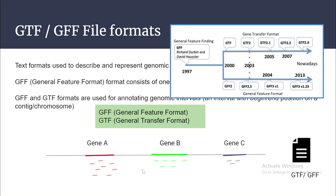The first annotation file format was GFF, which was developed by Richard Durbin and David in 1997. After that, in 2000 we have GTF and GFF2, and over the years different versions appeared such as GTF2, GTF2.1, GTF2.2, and the same for GFF. Nowadays the most recent version for GFF is GFF3.